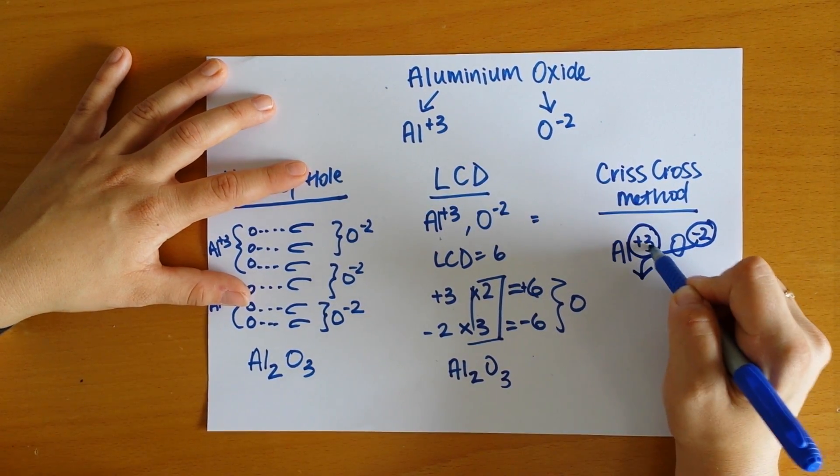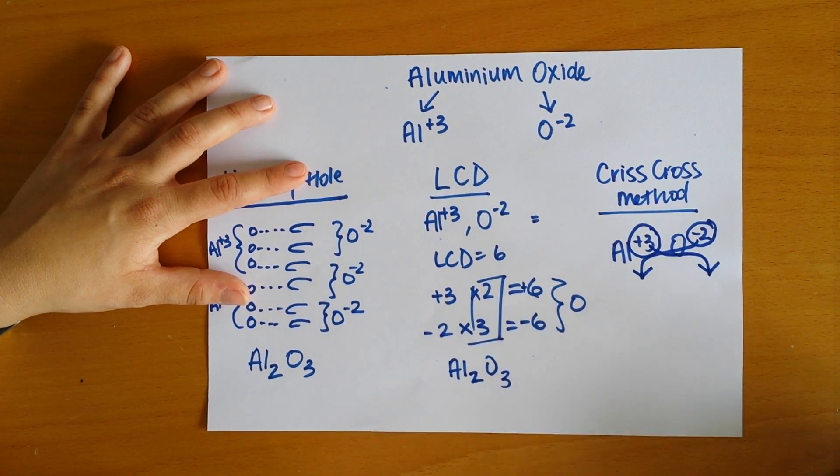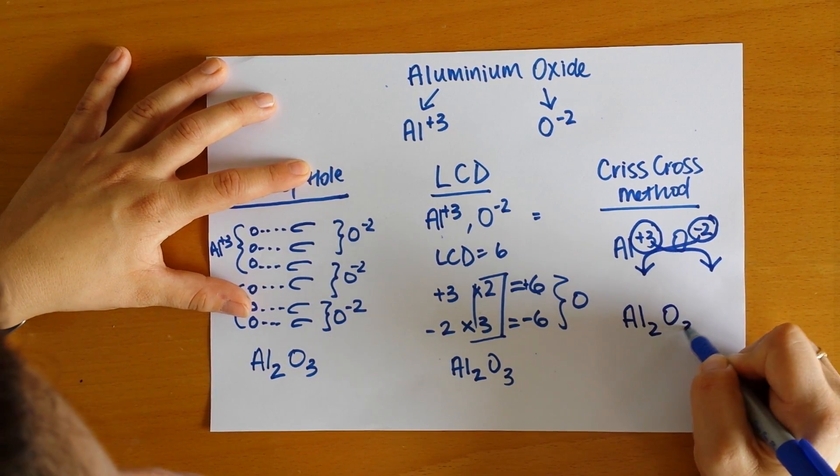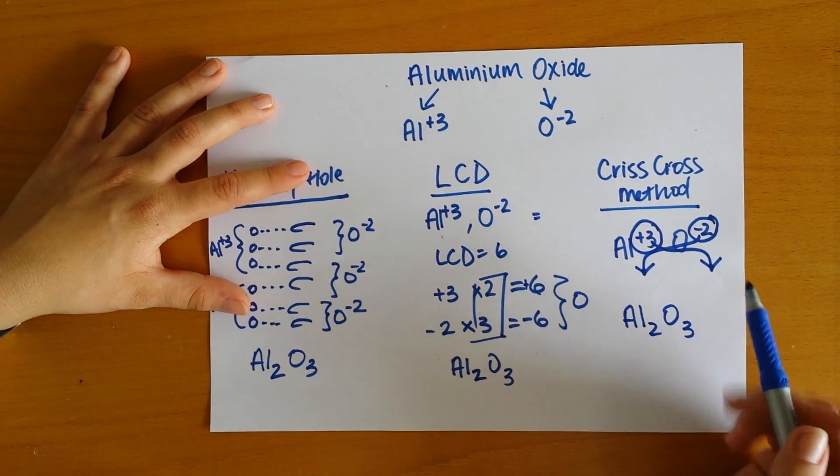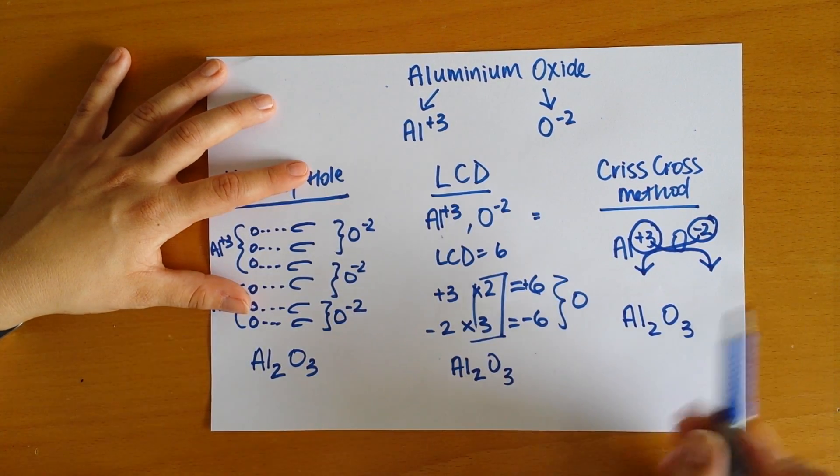And this ends up as the amount of oxide that we need. So we have aluminum two O three. So criss-cross—they move down to the opposite atom side.